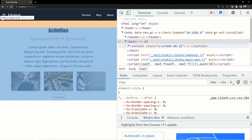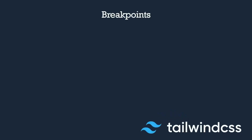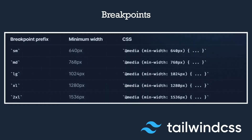For that, we use the breakpoint system. Breakpoints are values for multiple screen sizes. For small devices, the minimum width is 640 pixels; for medium devices, 768 pixels; for large devices, 1024 pixels; extra large is 1280 pixels; and 2XL for big TVs is 1536 pixels. These are the predefined breakpoint values available inside Tailwind.